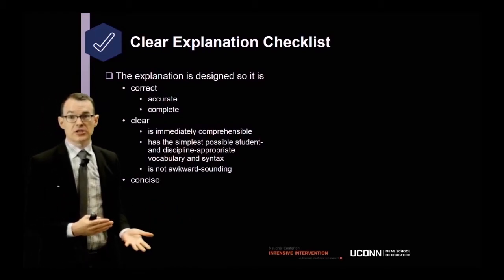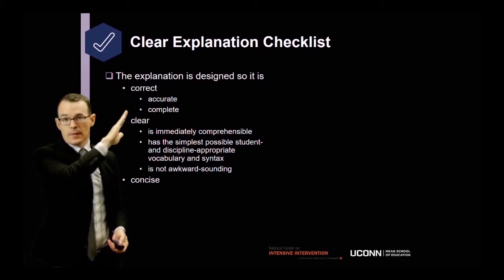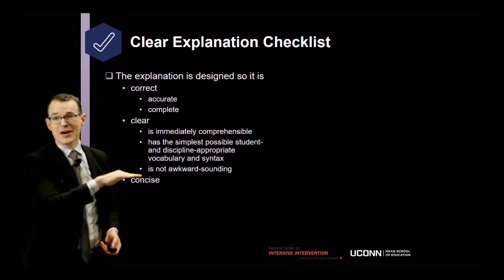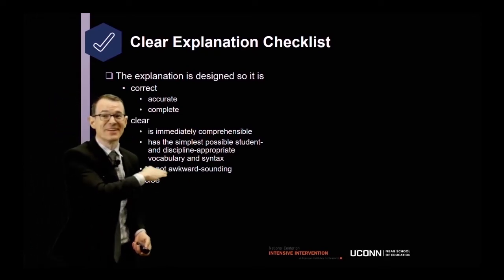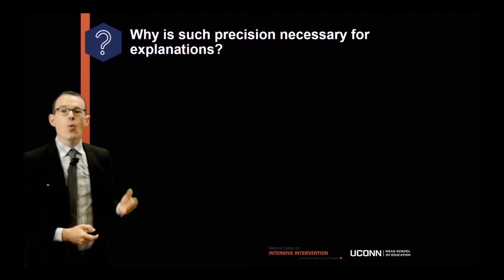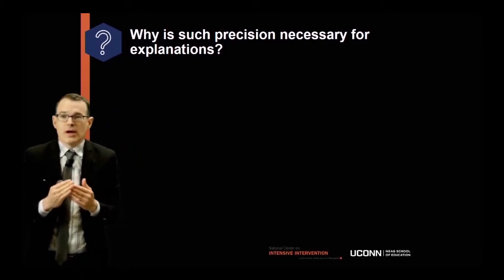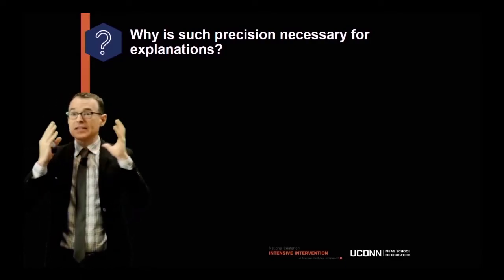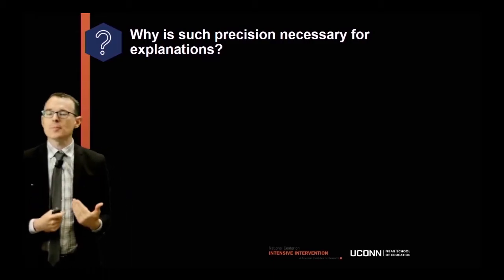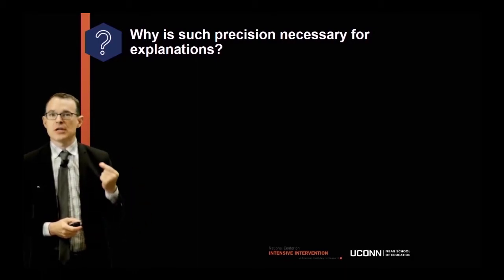What does a good explanation look like? First, the explanation is correct — accurate and complete. Second, it needs to be clear: immediately comprehensible, with the simplest possible vocabulary without being awkward sounding. And finally, concise. Those are the elements of a good clear explanation. Why is it important to focus on precision? This goes to the core deficit we think of in learning disabilities and difficulties.